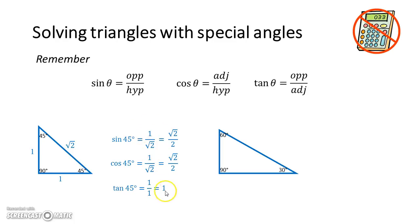So there are the three ratios for 45 degrees that you need to remember. It's not too hard to remember because tan 45 is one, and the other two are the same, one on root two.